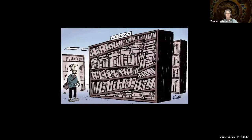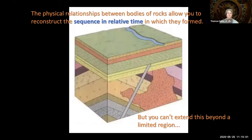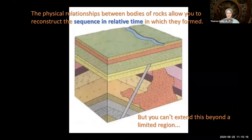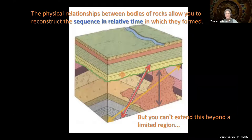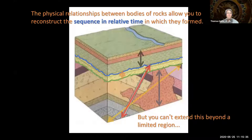These principles of physical stratigraphy, developed in the 1600s and 1700s, allowed geologists to begin to figure out, for any given location, what was the sequence of events — even if they didn't know how far back in time they occurred. You can take a given block of rock and examine it, and figure out these strata were first, then this intrusion, then this erosional event, then these strata, then this intrusion, then this erosional event, then these strata on top. But how can we relate what went on here to 10 or 100 kilometers away, or another continent? How can we correlate from region to region?